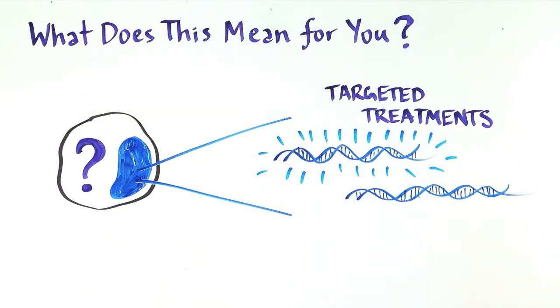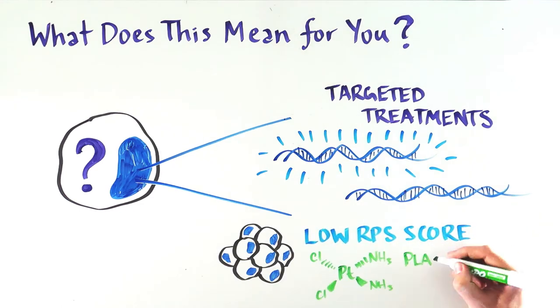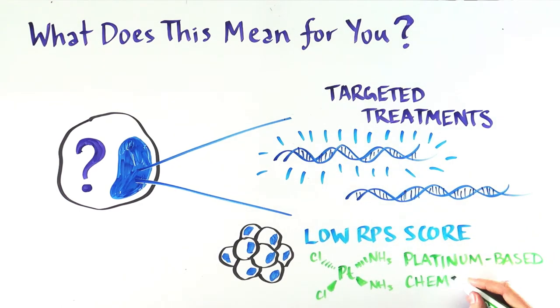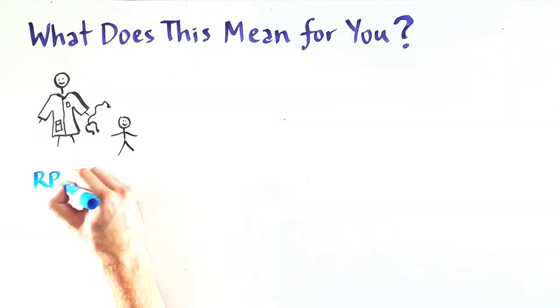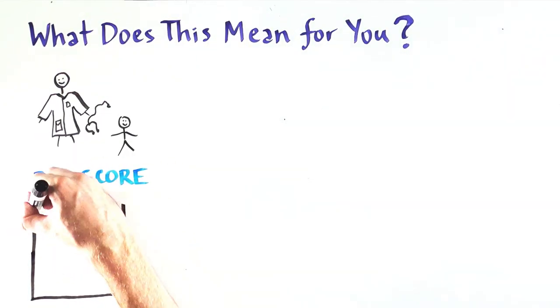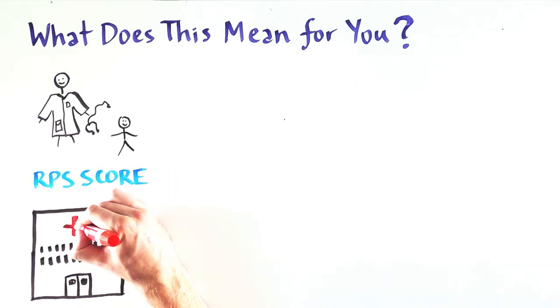In this case, perhaps we should only be treating tumors with a low RPS score with platinum-based chemotherapy for breast and lung cancer. Of course, before we use the RPS score for clinical purposes, we need to undertake thorough clinical trials to confirm this.